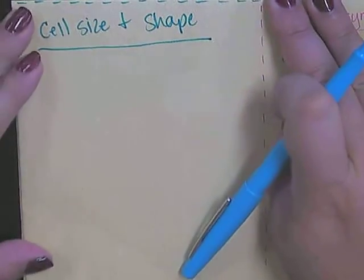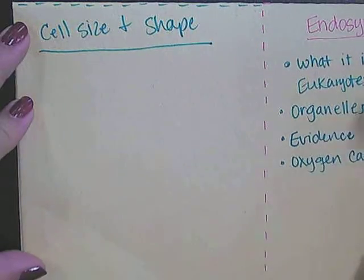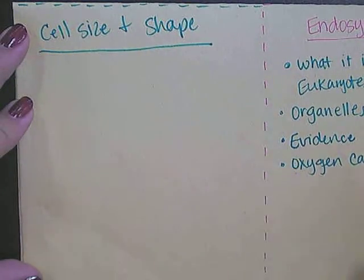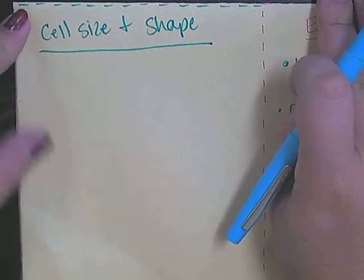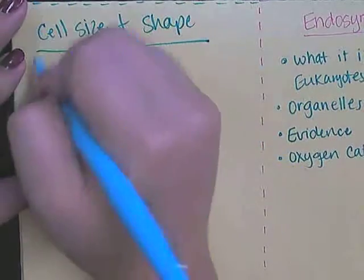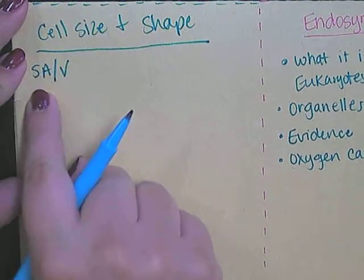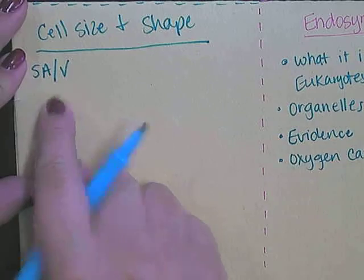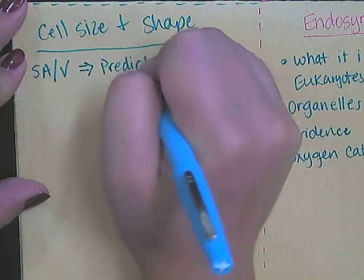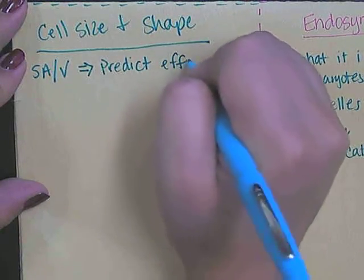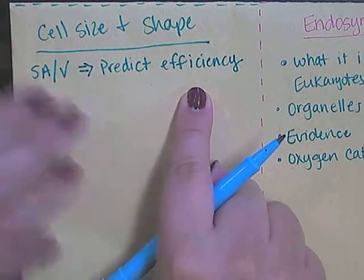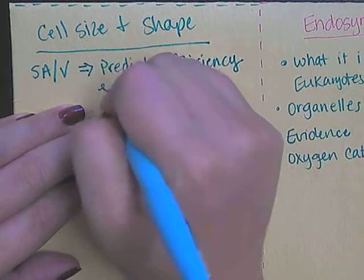Make sure you know how to use those formulas with the calculators you will be provided. The whole reason for doing that activity was to look at how the size and the shape of the cell are both important in determining whether or not the cell is going to be efficient. We're going to look at the surface area to volume ratio, which will allow us to predict how efficient a cell will be — basically the efficiency of exchanging material with the environment.